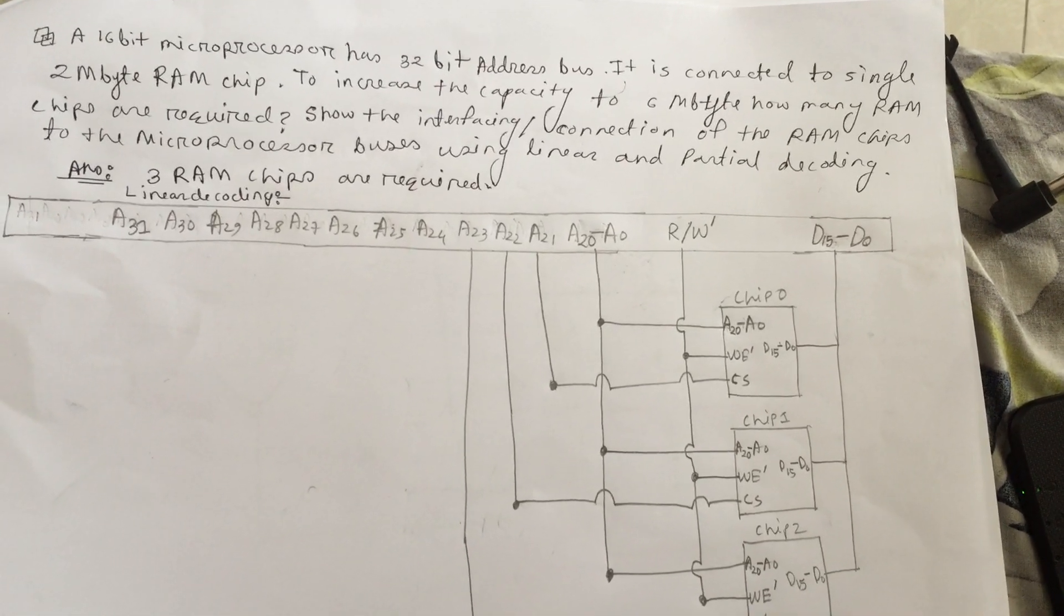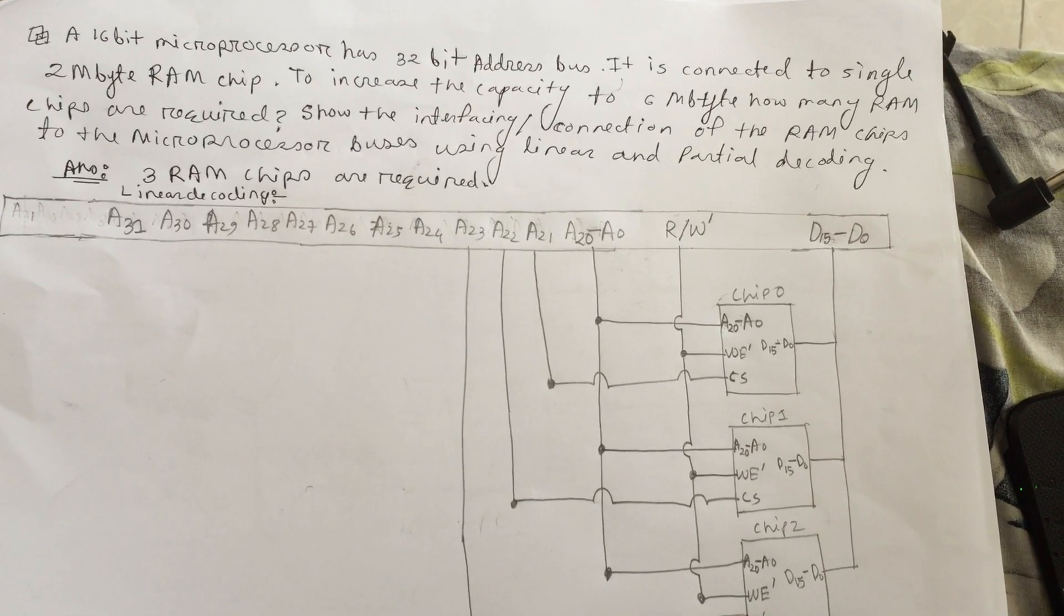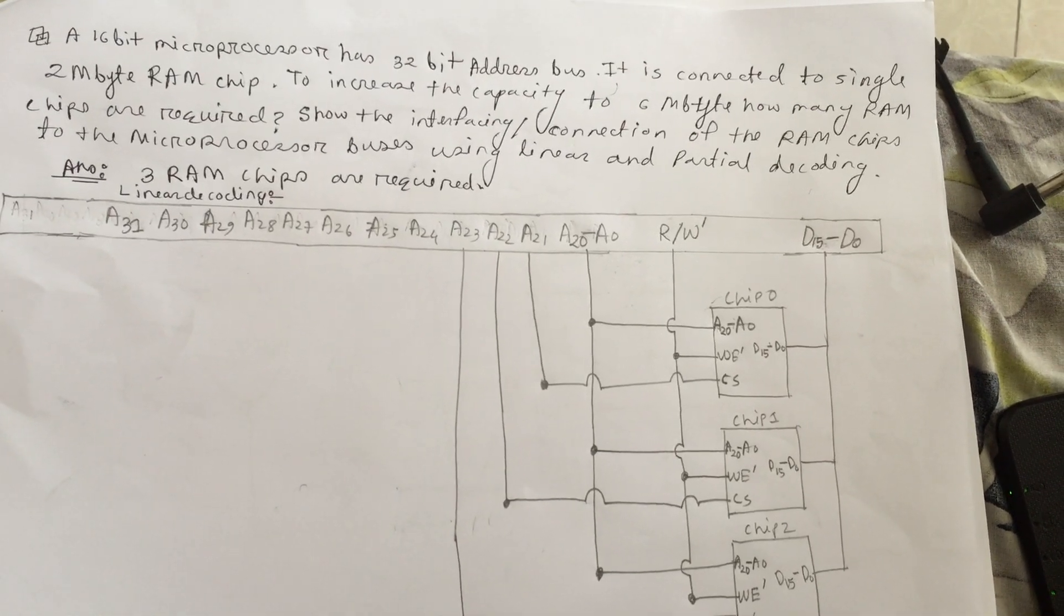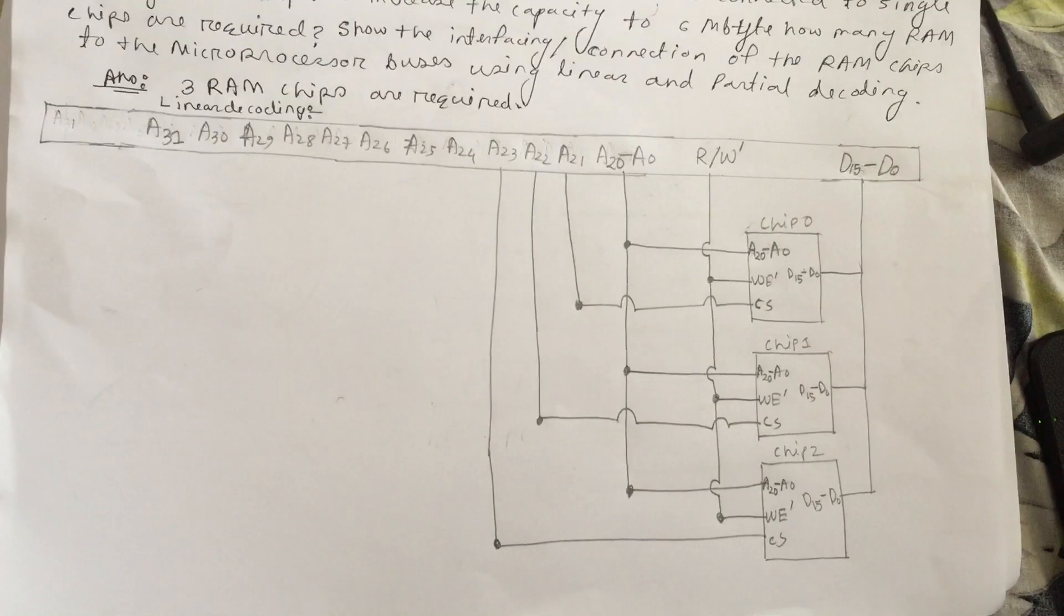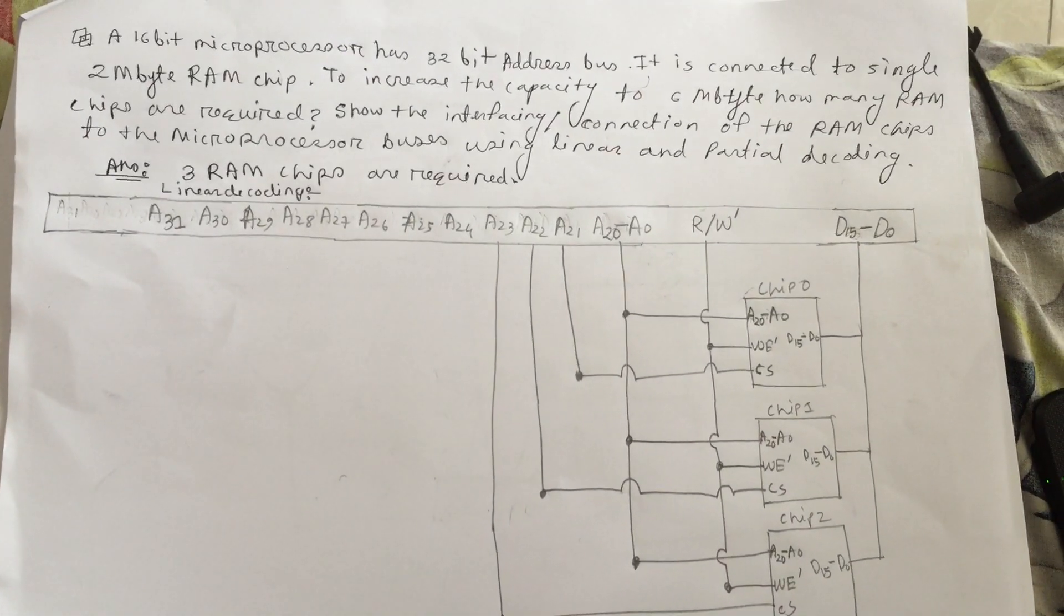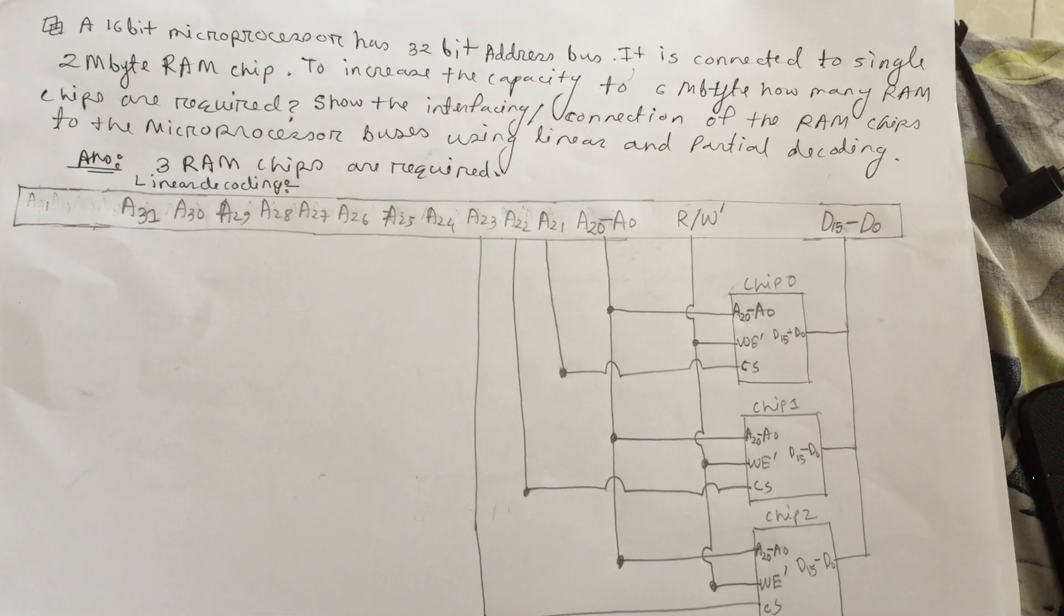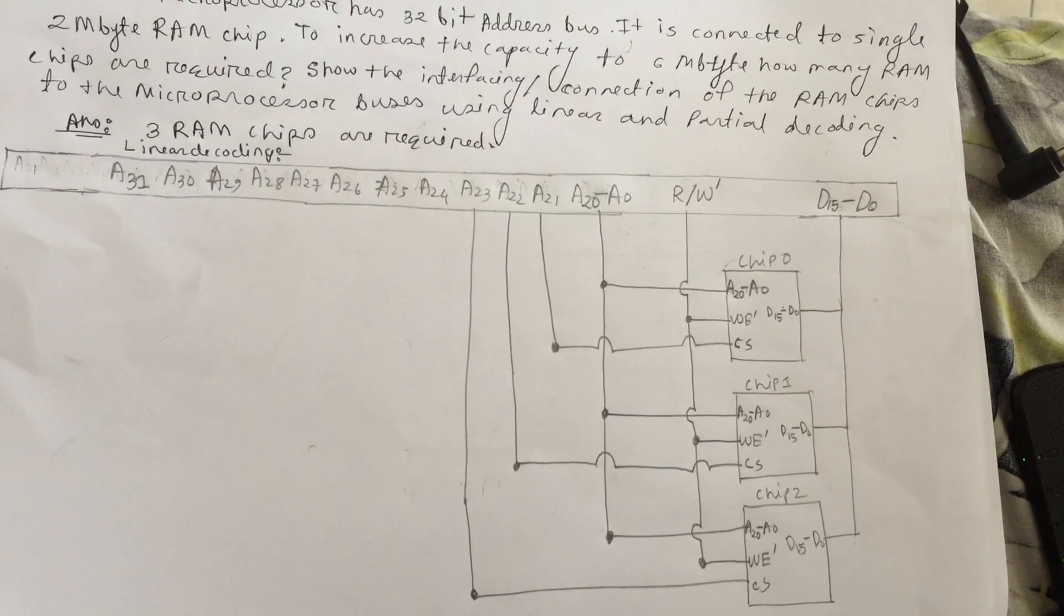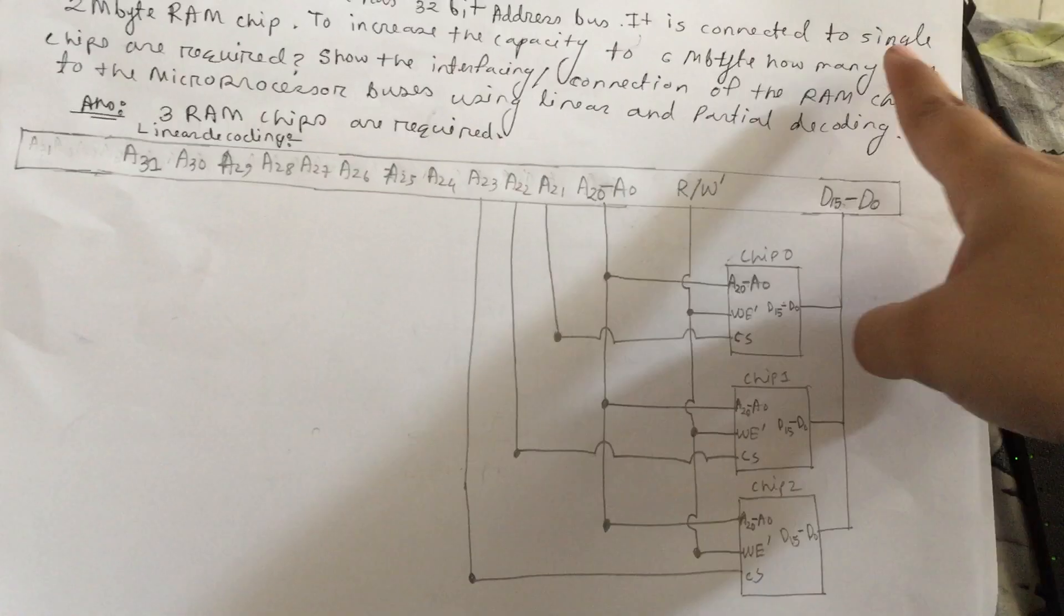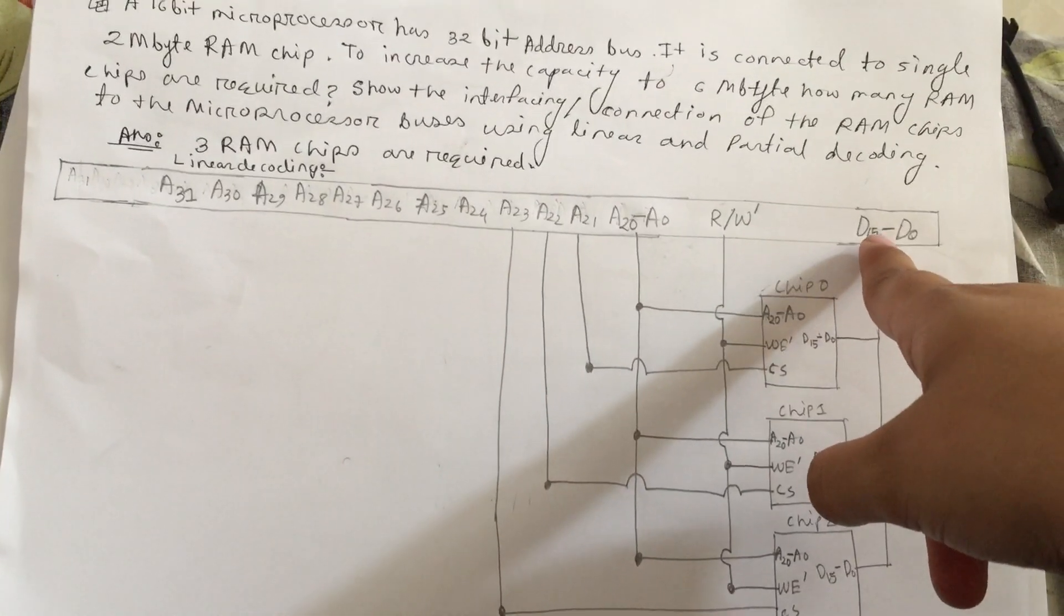So 3 multiplied by 2 equals 6, so it's 3 RAM chips. If we go for linear decoding, you can see that we need the 16-bit microprocessor. As it is 16-bit, I have taken d0 to d15.